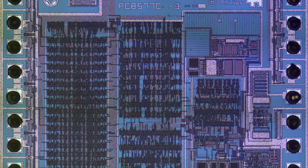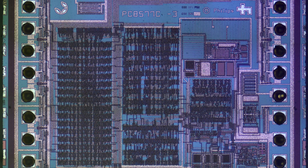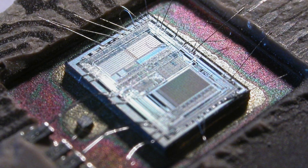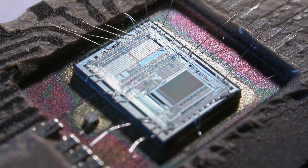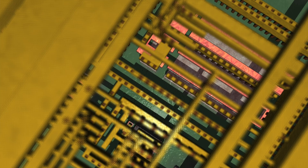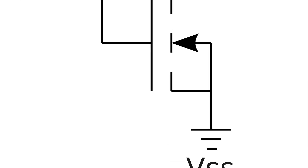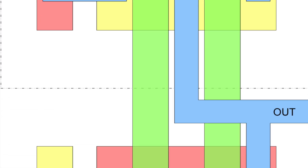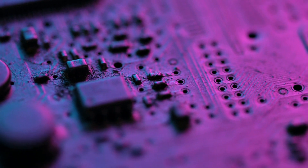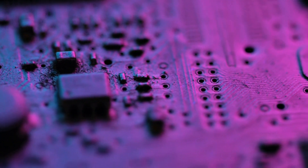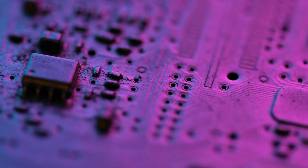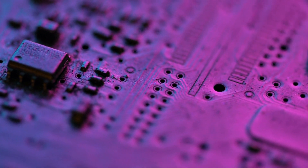Integrated circuits have evolved through several generations characterized by advancements in technology and fabrication techniques. The first generation used bipolar transistors while the second generation introduced complementary metal oxide semiconductors, CMOS technology, which significantly reduced power consumption. Most recent generations incorporate techniques like FINFETs and other 3D structures enabling greater performance and energy efficiency.